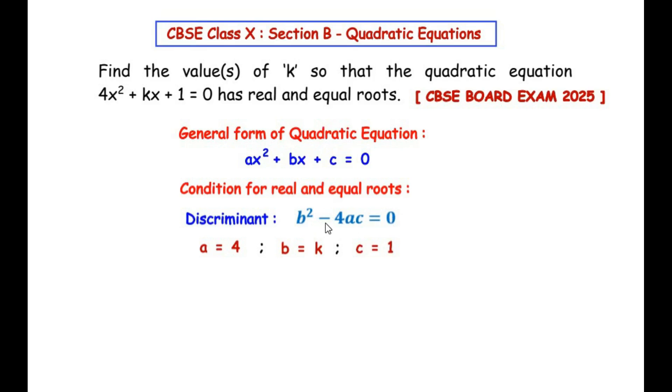To find out the value of a, b, and c, we have to look at the given equation and compare it with the general form. The value of a is equal to 4 because both are the coefficients of x². The value of b is equal to k because both are the coefficients of x, and c is equal to 1 because both are constants.